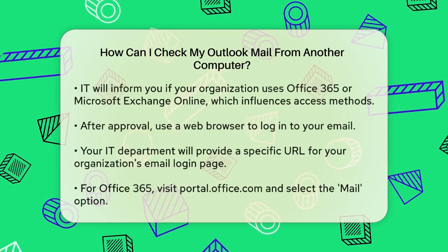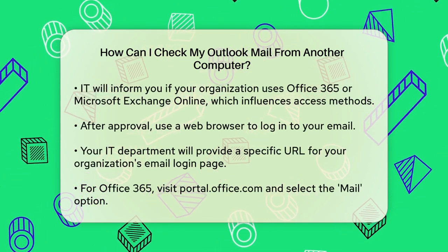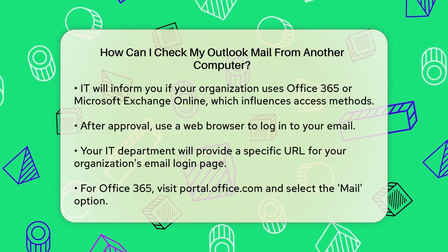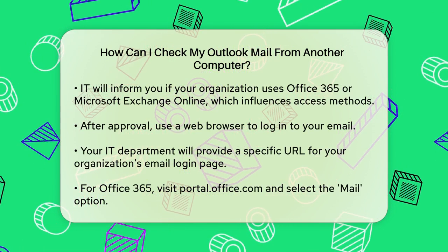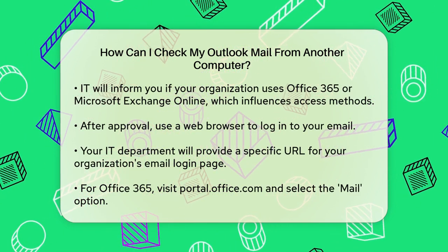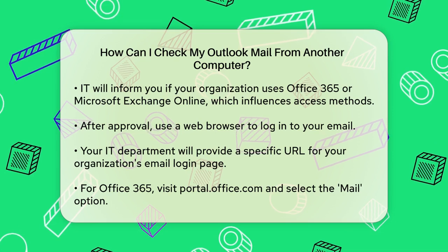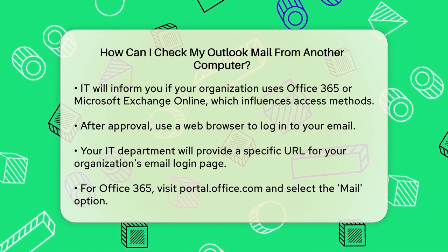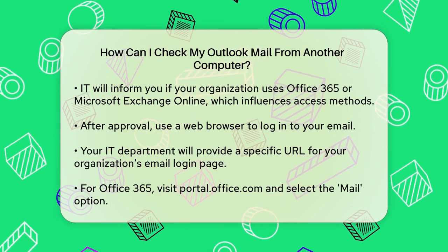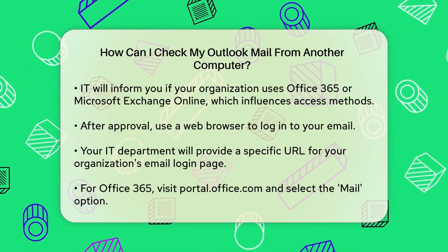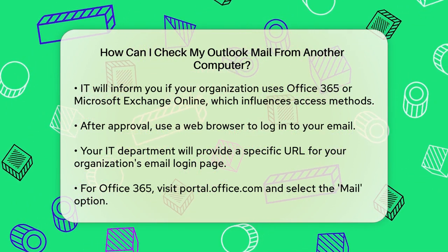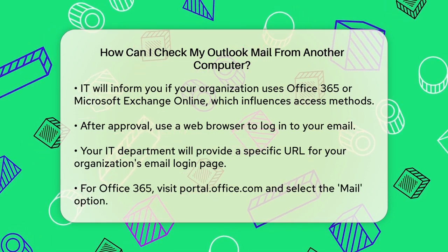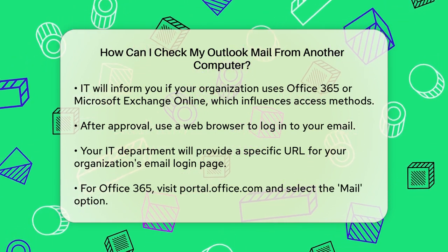Once you have the green light, you can use a web browser to log in. Your IT department will provide you with a URL to access the login page for your organization's email. Simply type this URL into your browser, enter your email address and password, and click the Sign In button. For example, if your company uses Office 365, you would visit portal.office.com and select the Mail option. If they use Exchange Server, the URL might look something like mail.xyz.com, where XYZ is your company's domain name. Once logged in, you'll see a familiar Outlook interface where you can access your emails, folders, and other features just like you would on your regular computer.